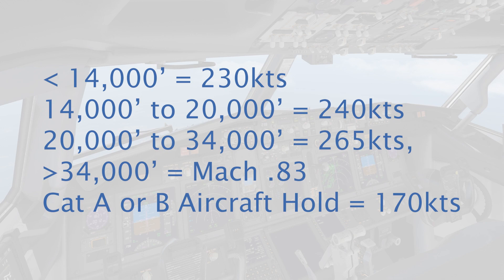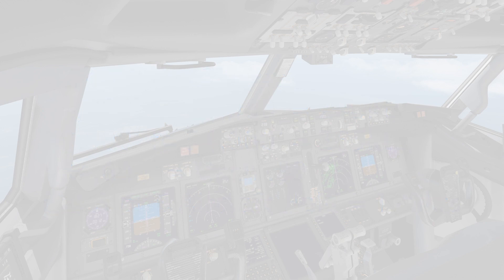There are holding patterns that are restricted to category A and category B aircraft only. In these holding patterns, you can only fly 170 knots during the hold. There's a bit more to a DME hold, as the distances of the holds are done with miles instead of time, and ATC will specifically give you your DME in distances to perform your turns. We won't be getting into DME holds here, but those are available on the website link below.